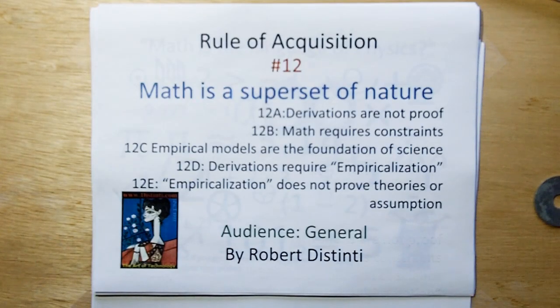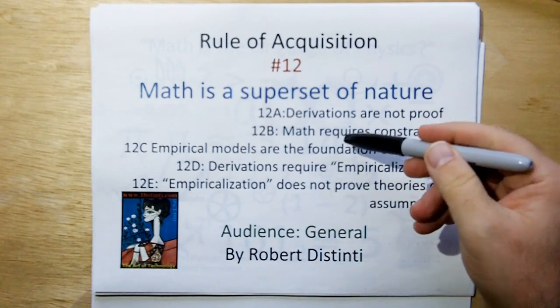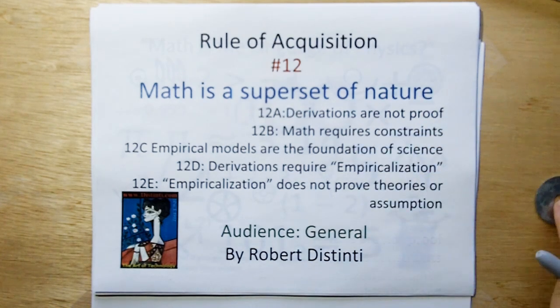Hi, welcome to the 12th Rule of Acquisition. Math is a superset of nature. And there's a lot of sub-rules here, and we'll cover those as we go along.